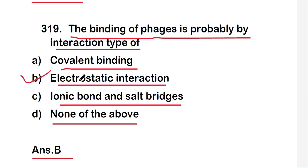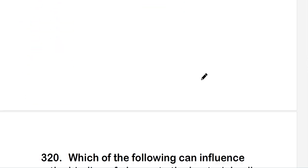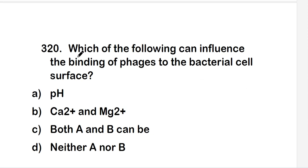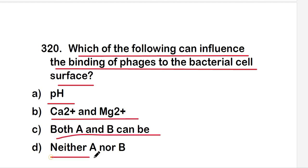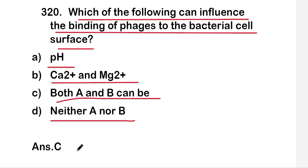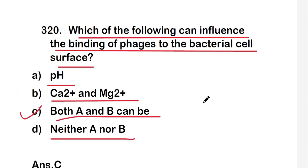The last question of this video is: which of the following can influence the binding of phages to the bacterial cell surface? The options are pH; calcium and magnesium ions; both A and B; or neither A nor B. The right answer is option C — both A and B. So pH and calcium and magnesium ions can influence the binding of phages to bacterial cell surfaces. These are all 20 questions of this video. Thank you for watching.